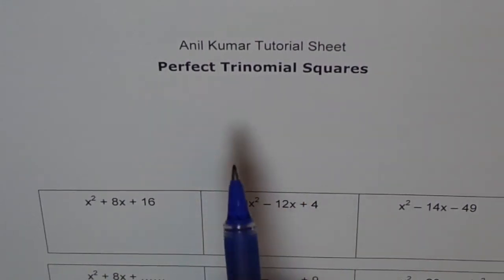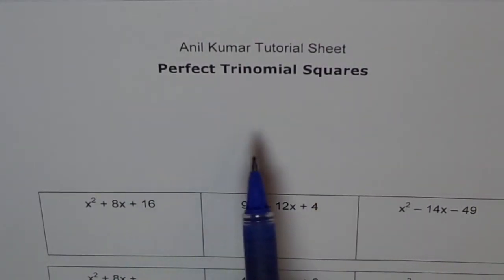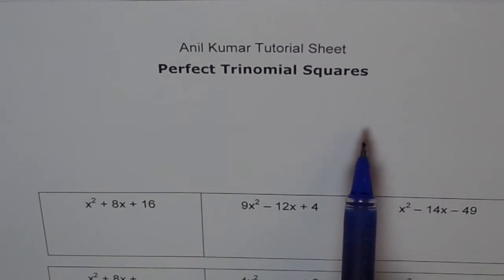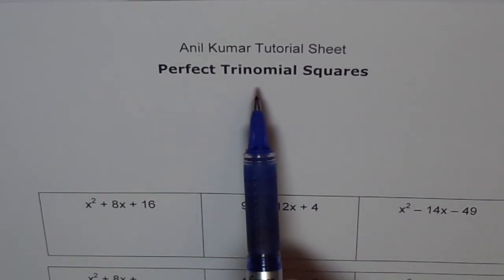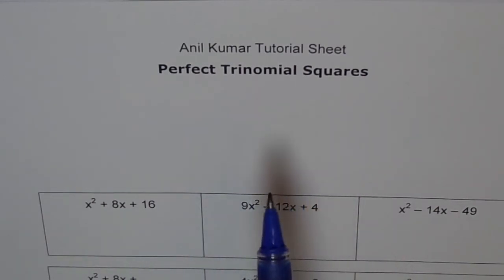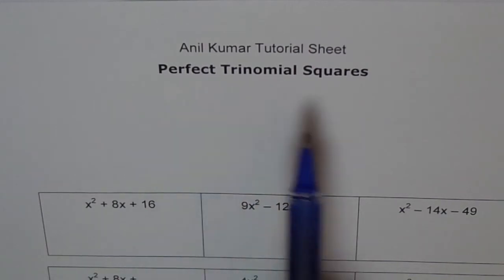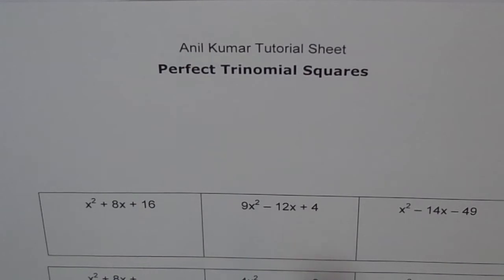Hello, this is a tutorial sheet on perfect trinomial squares. What is trinomial? Trinomial has got three terms. And when we say perfect squares, we get something like a plus b whole square. Let me elaborate on this.